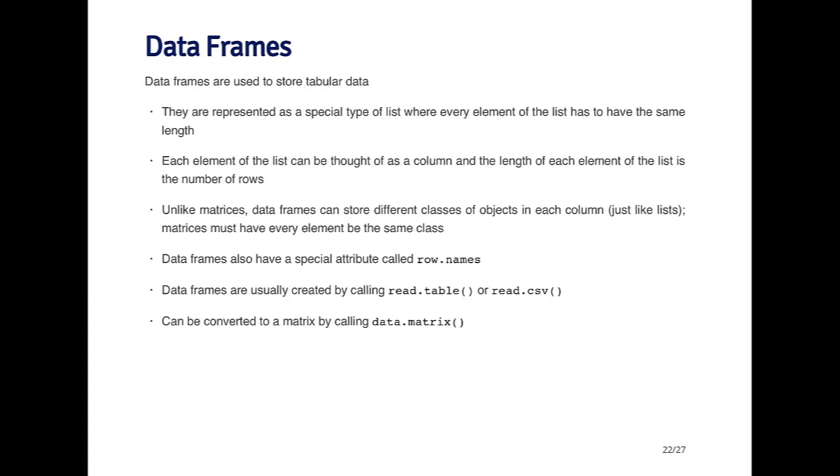Data frames are represented as a special type of list, where every element of that list has the same length. You can think of each column of the data frame as an element of the list. In order to be a table, every column has to have the same length. However, each column doesn't have to be the same type. The first column could be numbers, the second column could be a factor, the third column could be integers, the fourth column could be logicals. It doesn't matter what the different types are.